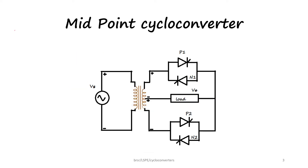This is a midpoint cycloconverter, called so because we are using a center tap transformer here. A center tap transformer has a primary and a secondary in which there is a neutral point. The upper half and the lower half of the transformer will have the same value of voltage as available in the primary. So Vs is the source voltage.